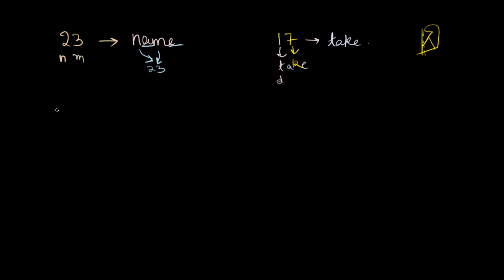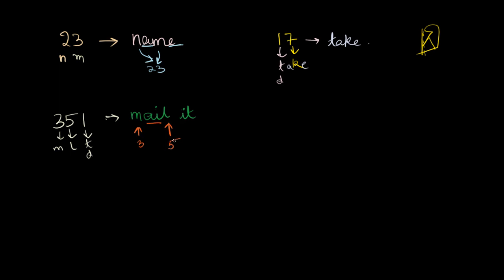Let me give a 3-digit number this time: 351. What can 351 be converted into? What is 3 associated with? It's M. What is 5 associated with? It's L. What is 1 associated with? It's T or D. So what can we make of this? It can be 'mail it' — you can make two words. M retains for 3, L is for 5, I is a vowel, and T is for 1. So we have retained our 351.